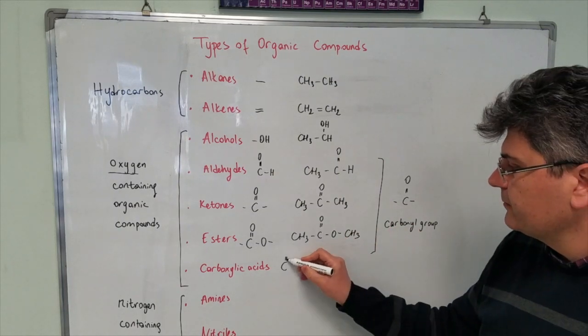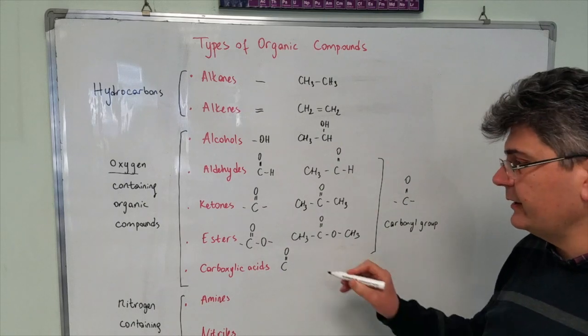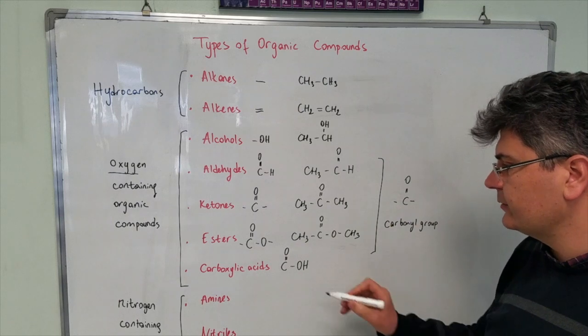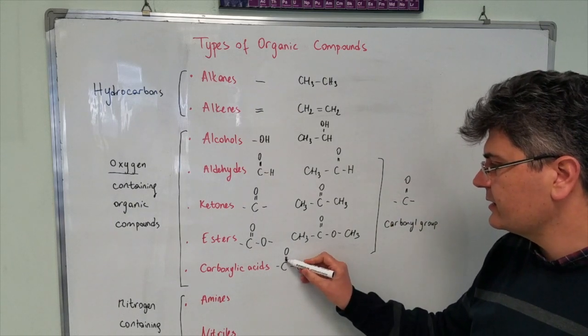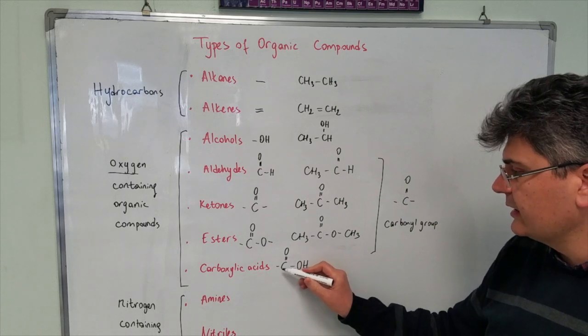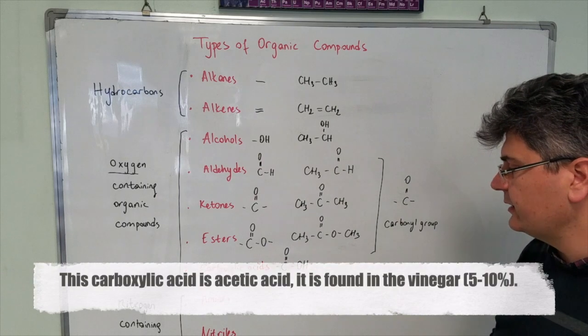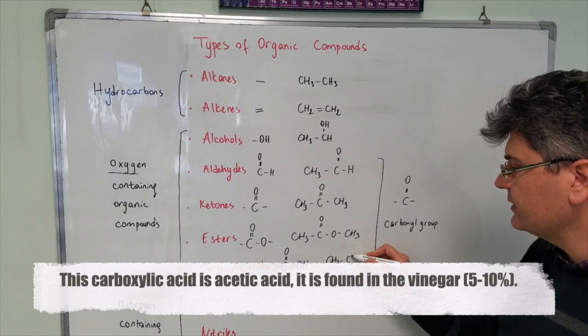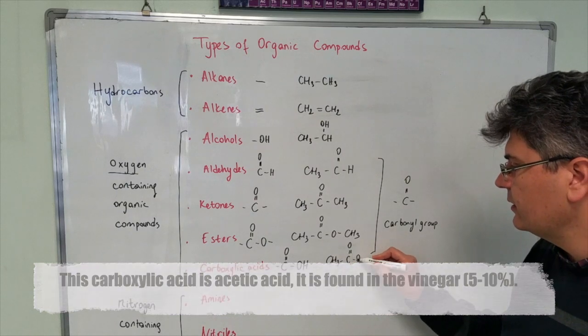Carboxylic acid contains carbonyl group again but it does also have an OH group connected to that. This carbon atom is already making one, two, three connections. So, it's going to connect to another radical in here. It can be something like CH3-COOH.